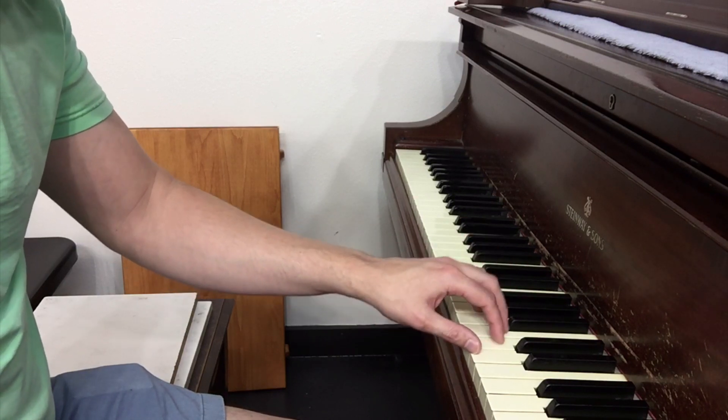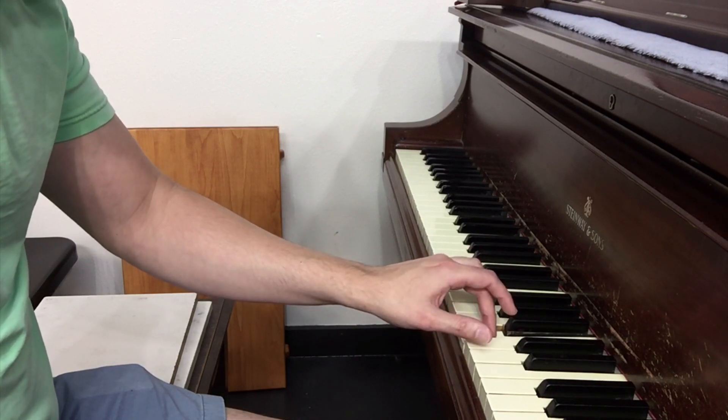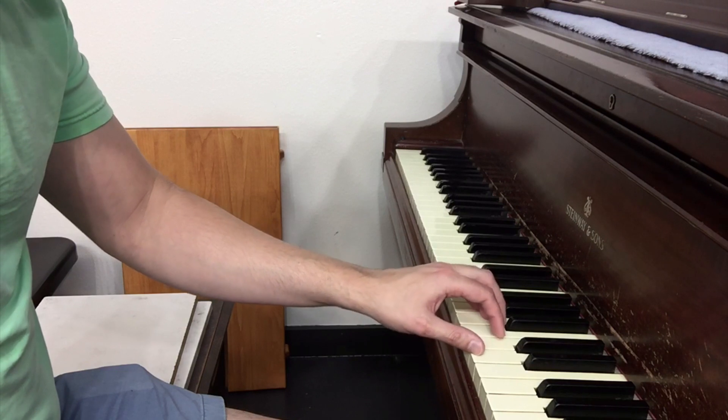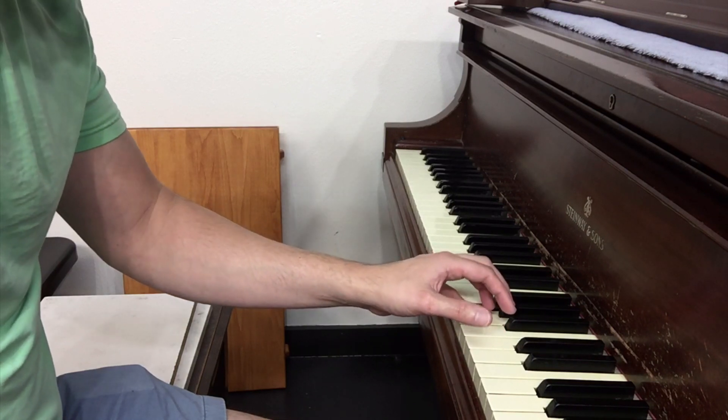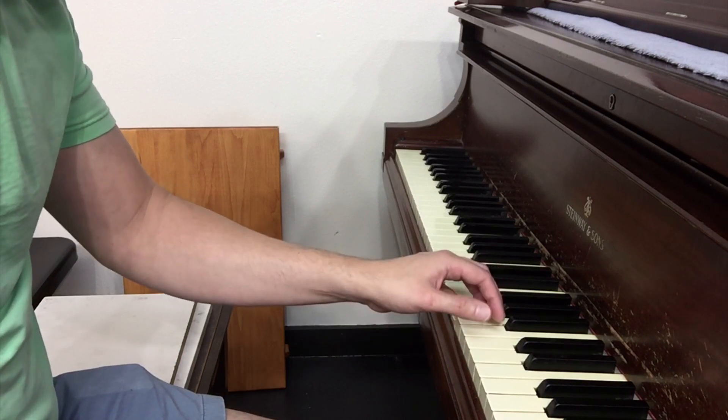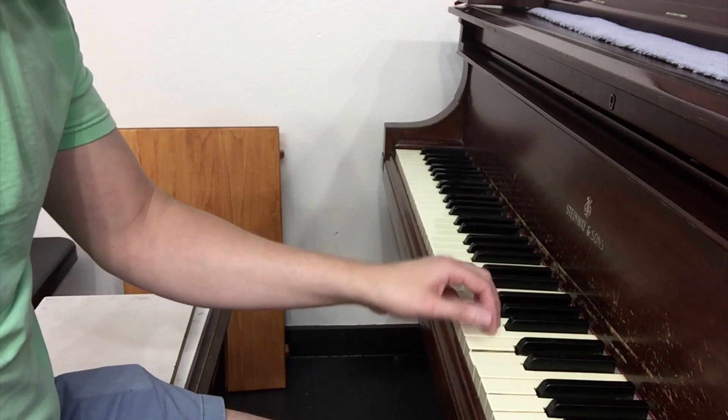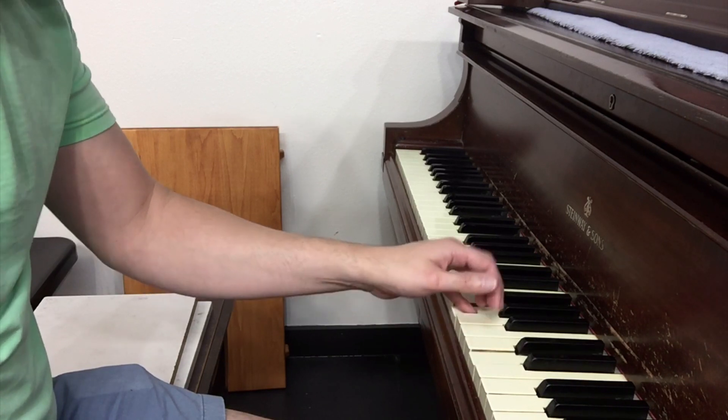So I find it's much more effective if you start here, and then you rotate, and then the finger rotate. One way to practice this is actually to practice what I call the thwack motion, where you're thwacking like this. You see? So I'm coming from above the key, and doing that.